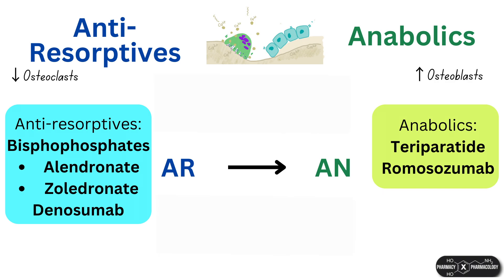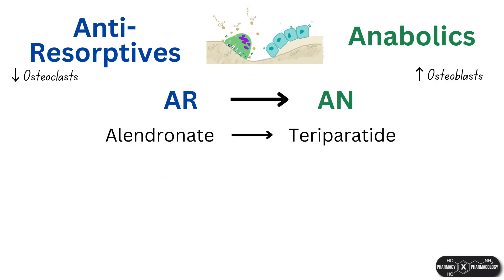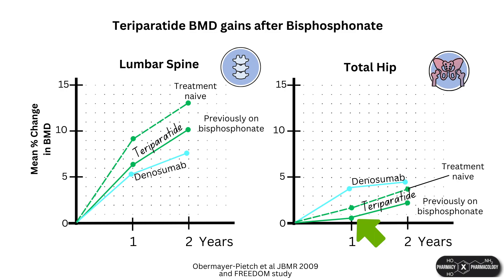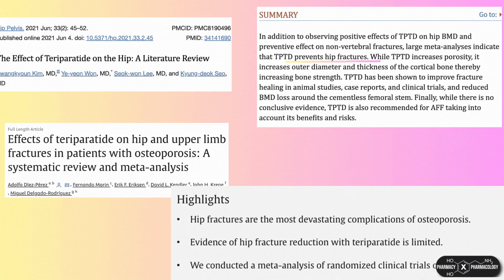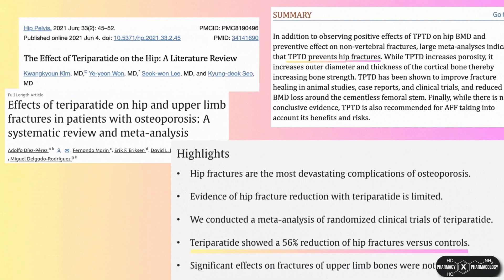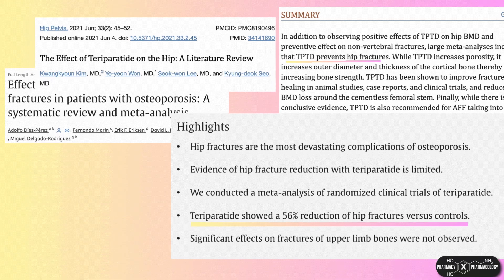Moving on to anti-resorptive to anabolic transitions, starting with alendronate to teriparatide. Studies have shown that transitioning from alendronate to teriparatide produces a further increase in BMD at the spine, though teriparatide's effects are blunted by bisphosphonates. BMD gains at the hip are significantly less; however, real-world observational studies have shown that teriparatide still reduces fracture rate at the hip, though more data is required to confirm this.